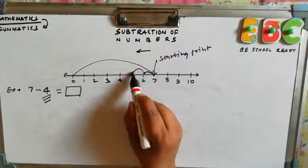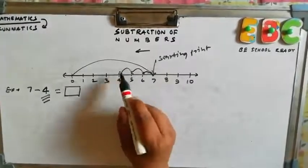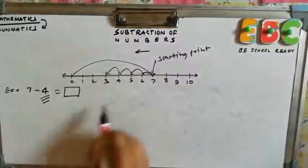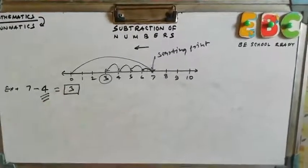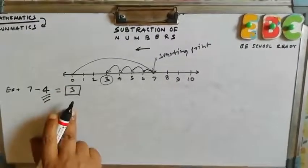First jump. Second jump. Third. And this is fourth. Where we reached? We reached at 3. Means 7 minus 4 is equal to 3.